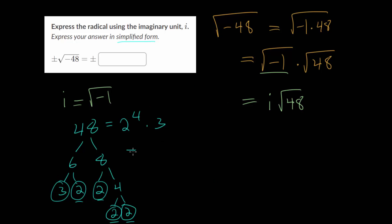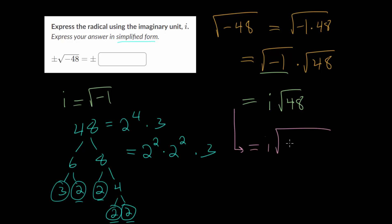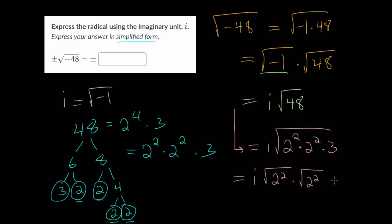It's a good idea to separate these into pairs. So instead of having four 2s multiplied together, we can have two 2s — or 2 squared — multiplied by two more 2s. The reason we want to do this is that when we simplify the square root of 48, we can break it up into perfect squares. So 48 is just 2 squared times 2 squared times 3. We can separate this product into individual square roots, giving us i multiplied by the square root of 2 squared, multiplied by the square root of 2 squared, multiplied by root 3.